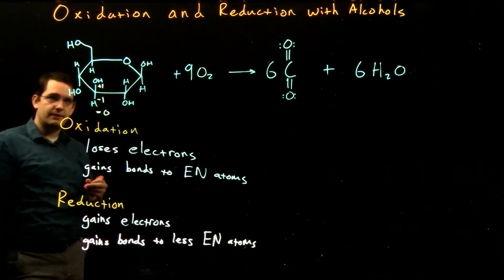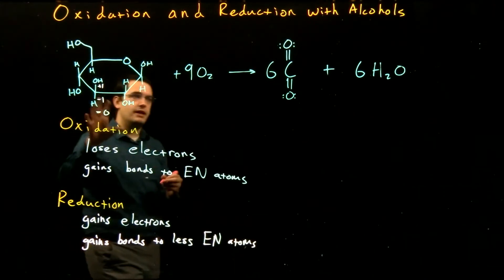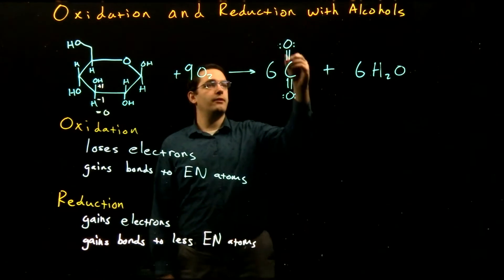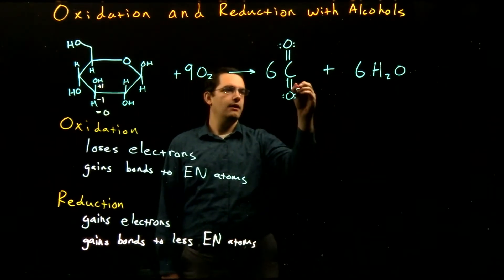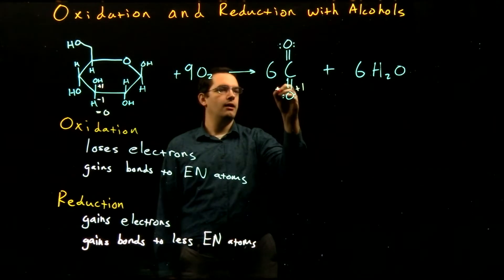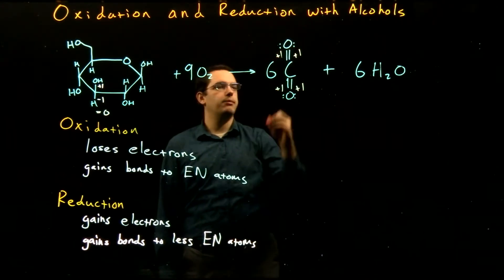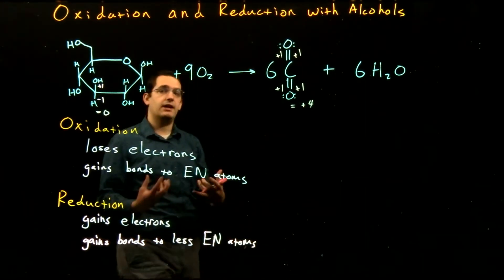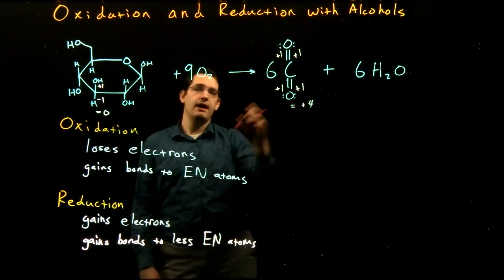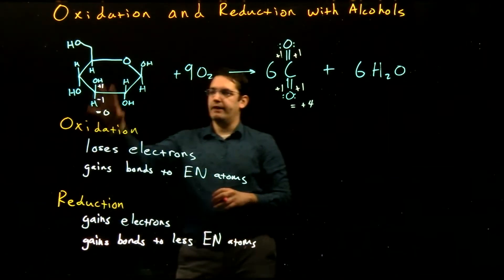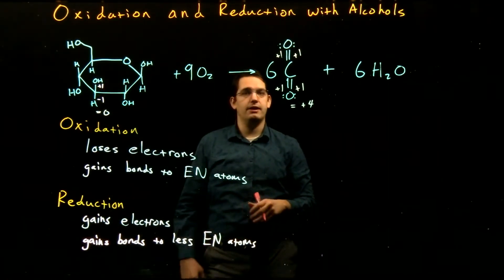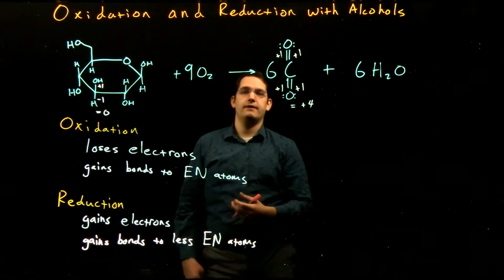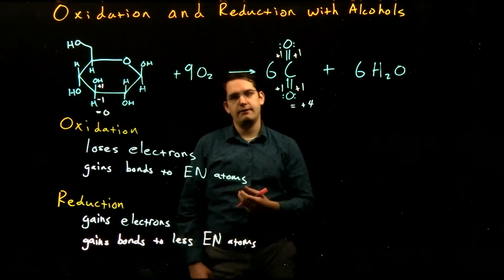If we looked at our other carbons in glucose, they all have similar oxidation numbers. Comparing to carbon dioxide: there are four bonds to oxygens, giving +1 +1 +1 +1 = +4 total. What we see is that carbon is highly oxidized after our reaction — it's much more reduced at the beginning. This shows us that our carbon has indeed been oxidized during this process as we're creating that energy.